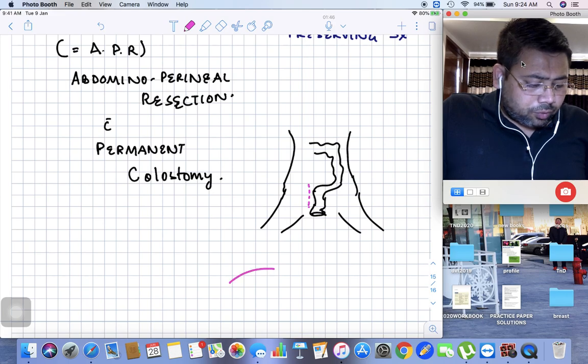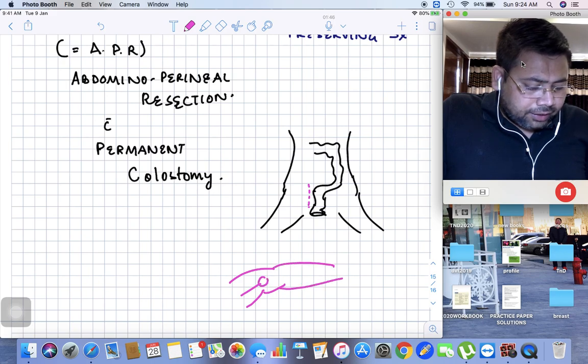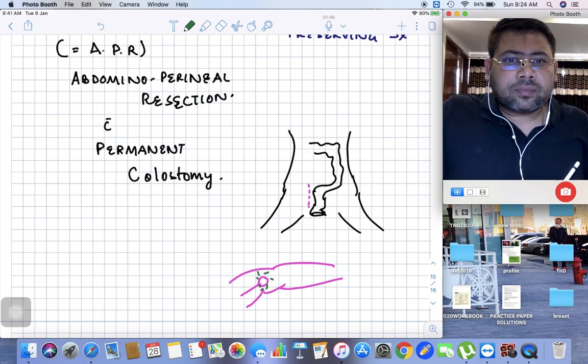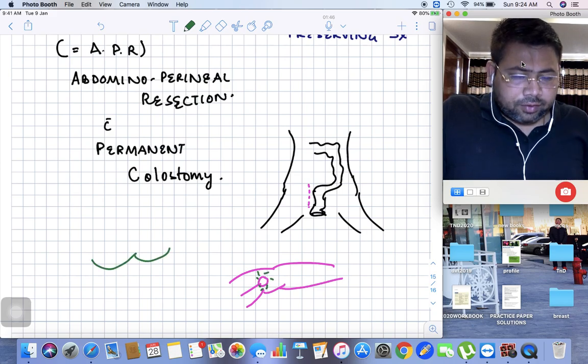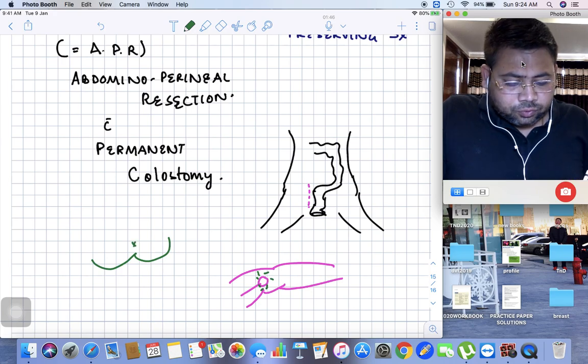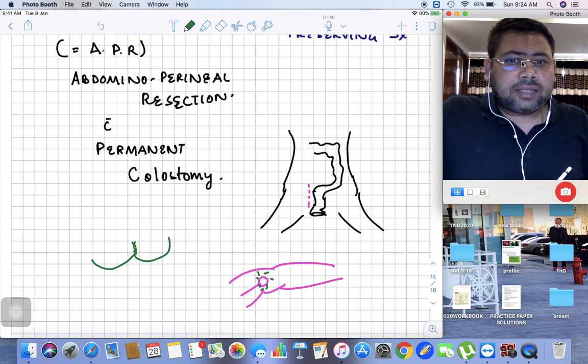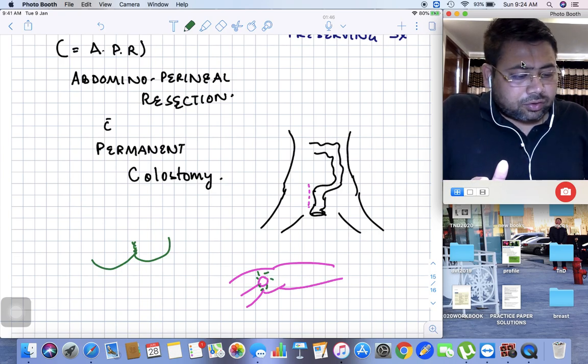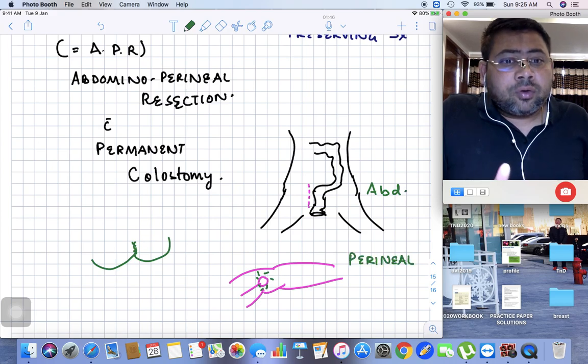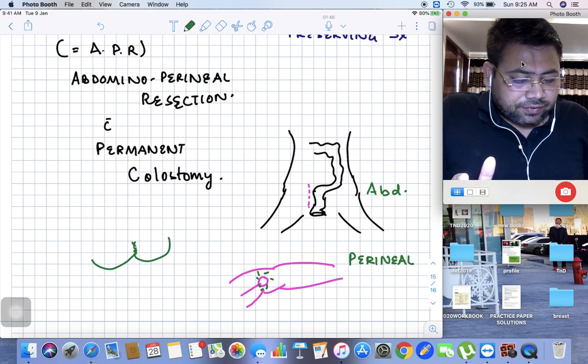You change the patient to prone position, then complete the remaining surgery via perineal incision. At the end, when you've removed the complete rectum and anal canal, you suture close this anus. This is the combination - abdominal approach and perineal approach - that's why it's known as abdominal perineal resection, or APR.